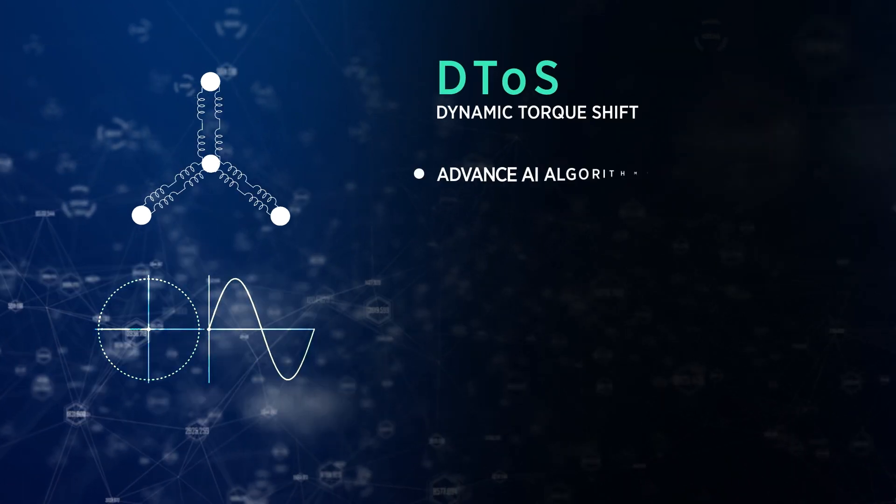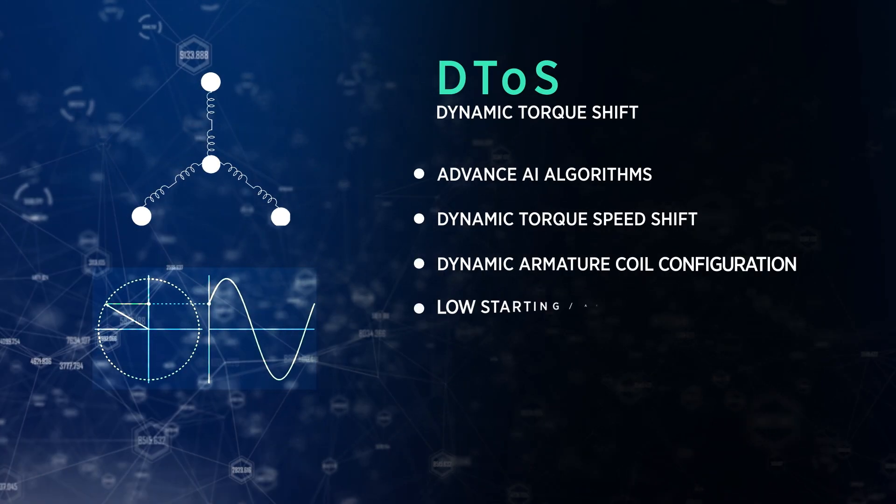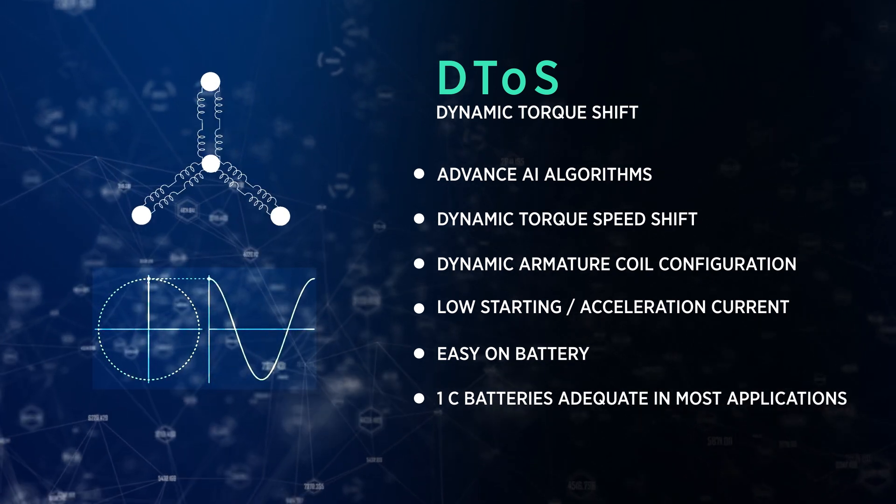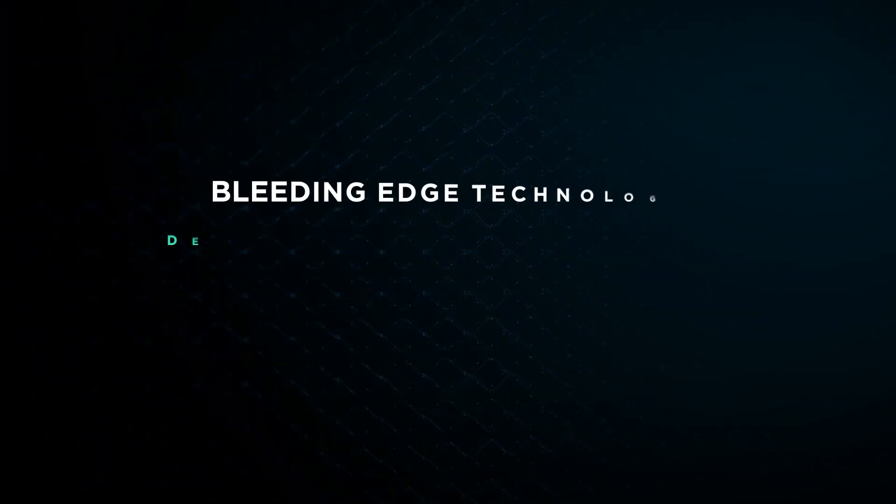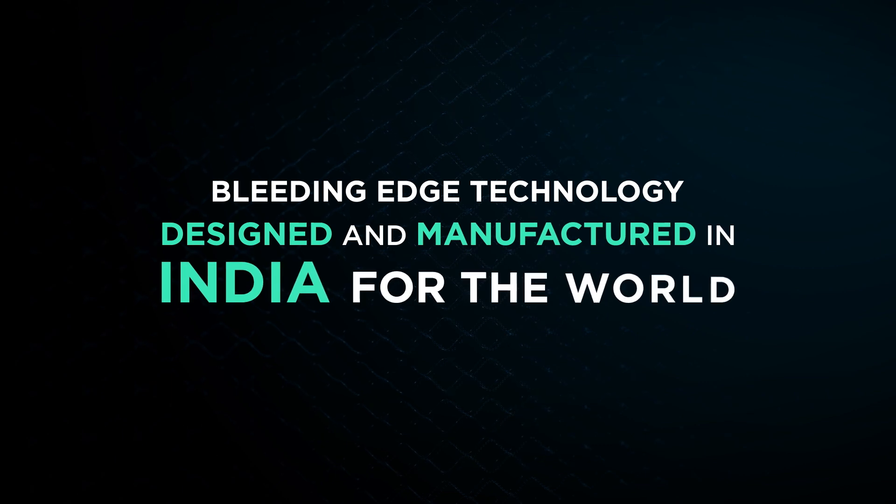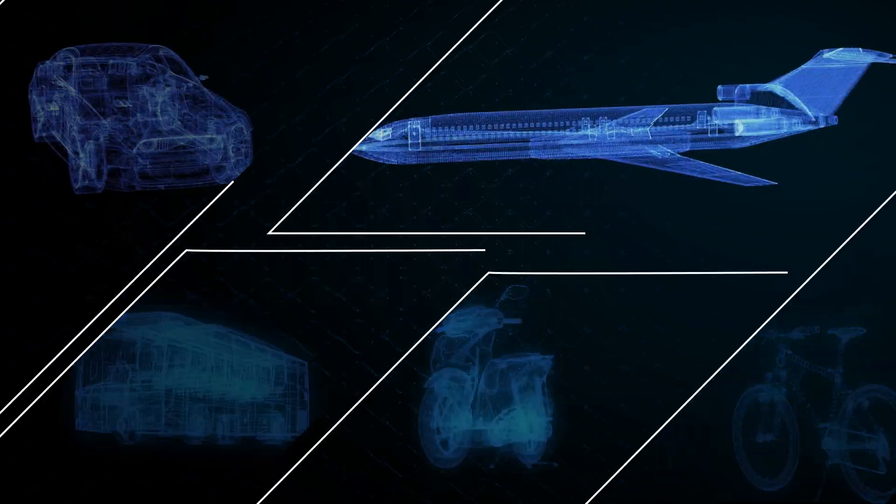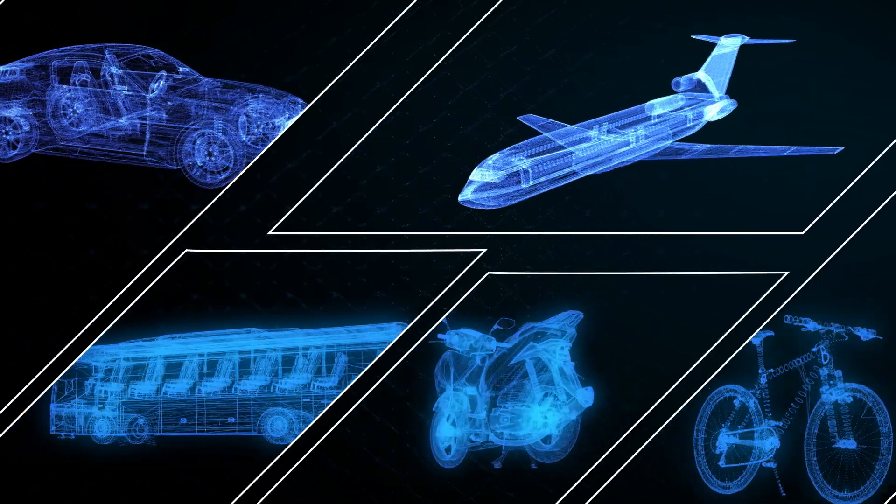Dynamic torque shift for gearless transmission at low RPM enabled by advanced artificial intelligence algorithms maintaining high efficiency. Designed and manufactured in India, curated for the world. All parts manufactured in India, available for all range of e-vehicles.